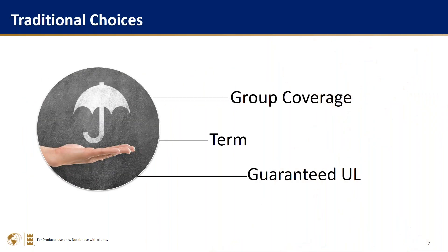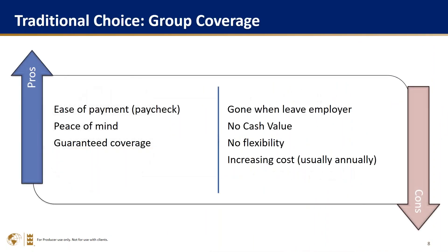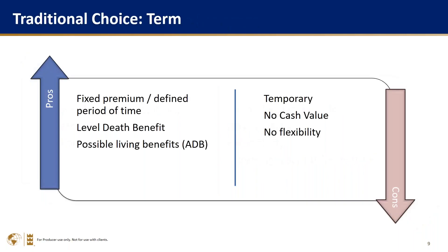Here are the traditional common solutions: group coverage, term, and GUL. Group coverage is easy — you get it with your employment, it gives you peace of mind, it's guaranteed, and it just comes out of your paycheck. However, on the downside, if you leave your job you lose the coverage. There's no cash value, no real flexibility, and the cost tends to go up every year — though it is a good thing to have.